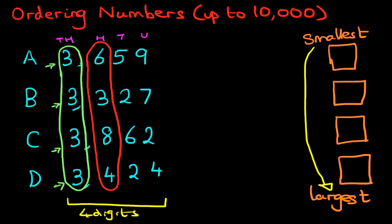So that's the hundreds. A has got six. B has got three hundreds. C has got eight hundreds. And D has got four hundreds.